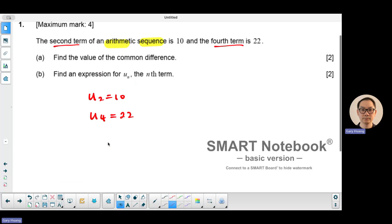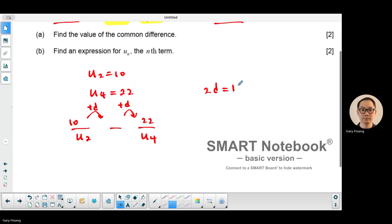Now there are different ways of setting this up. You can set up two equations, but the faster way of doing this is if you look at the second term and the fourth term, you know there are two jumps or two differences. So the difference between the two terms is going to be 2d. 22 minus 10 is going to be 12, which means one single difference is going to be 6.